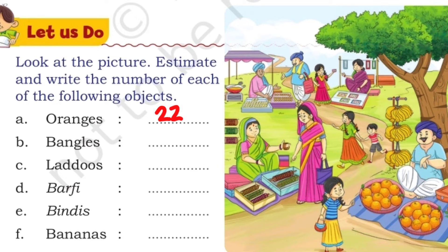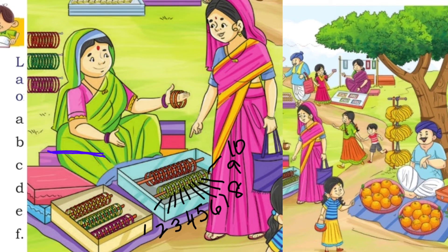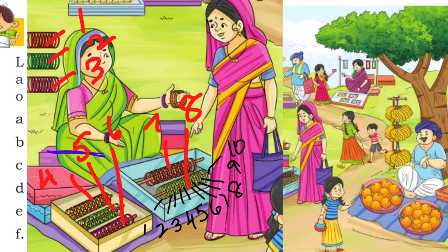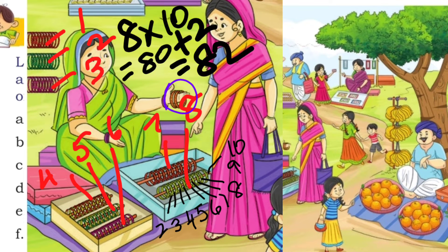Next we have bangles. We count the bangles in groups. Each group has 10 bangles: 1 through 10. There are 8 groups in total, so 10 into 8 is 80 bangles. And the lady is wearing 2 bangles on her hand. So 80 plus 2 is 82 bangles.